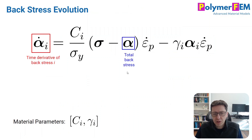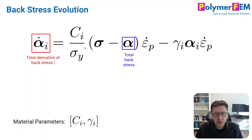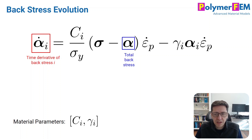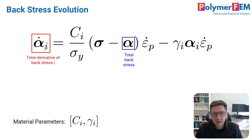The evolution of the back stress is often represented by an equation where the time derivative of the back stress depends on the current stress, the current back stress, the plastic strain, and two material parameters called c and gamma. We allow for multiple back stress networks — that's why there's a subscript i on these — and these material parameters need to be found from experimental data using something like MCalibration.